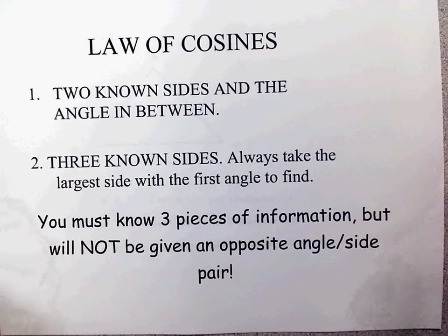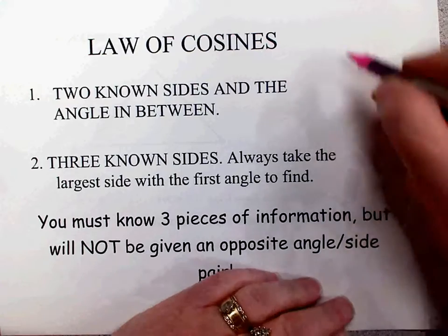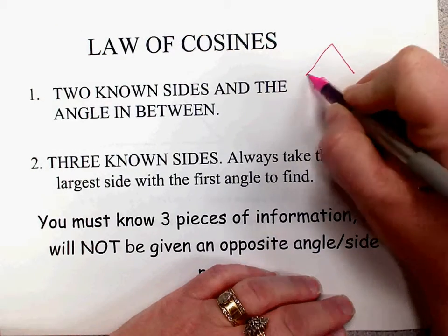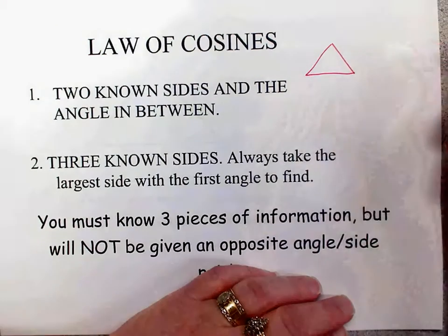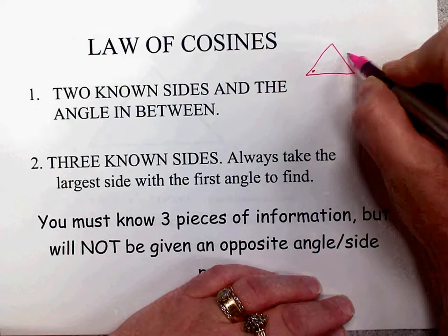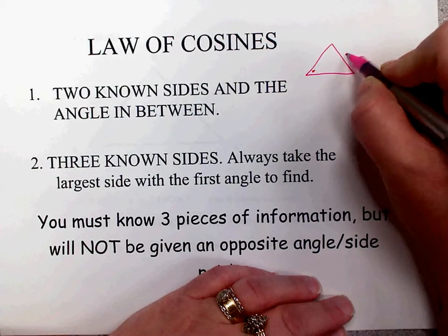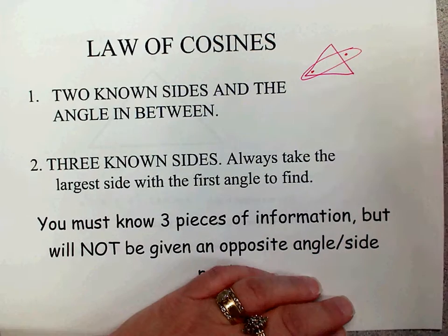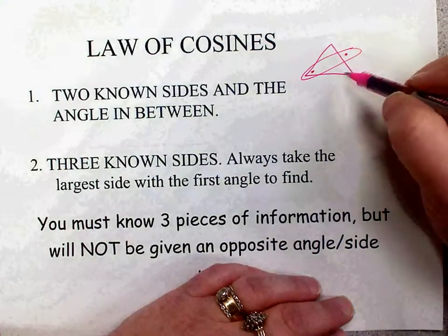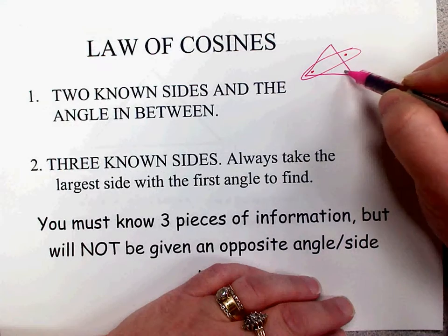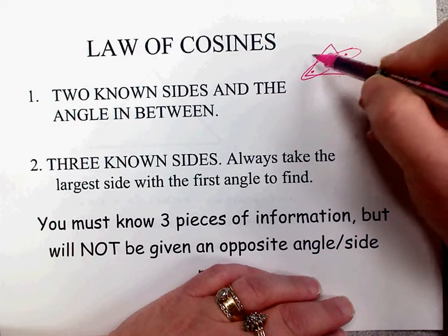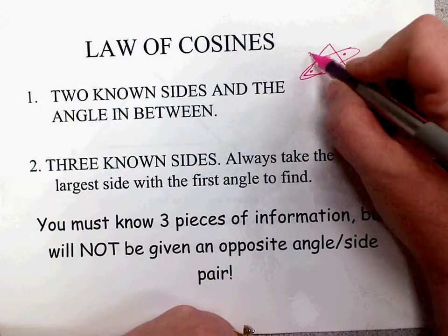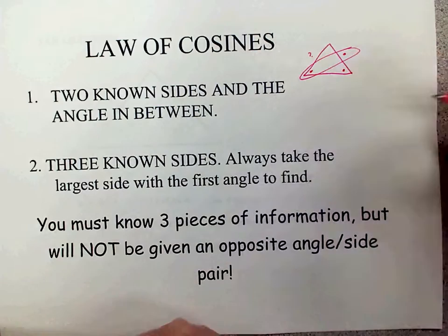To use the law of sines, you have to know an opposite angle and side pair. So if I was given this angle and this side, there's an opposite angle and side pair. That means if I was given this angle I could find this side, or if I was given that side I could find that angle.